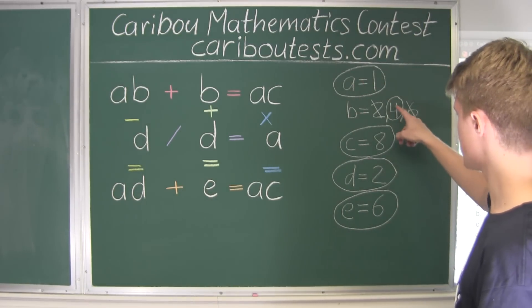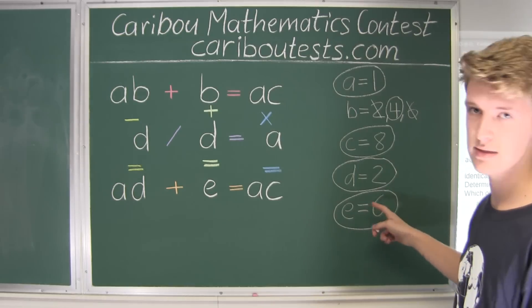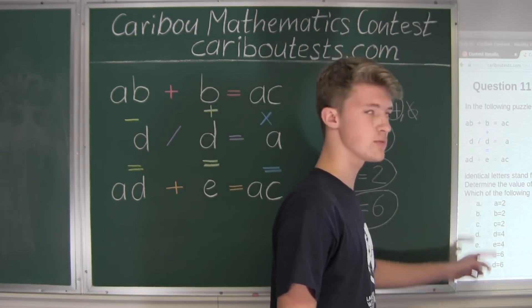So A is 1, B equals to 4, C is 8, D is 2, and E is 6. Now let's look at the possible options.